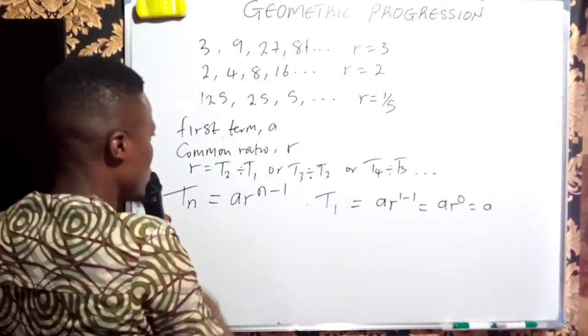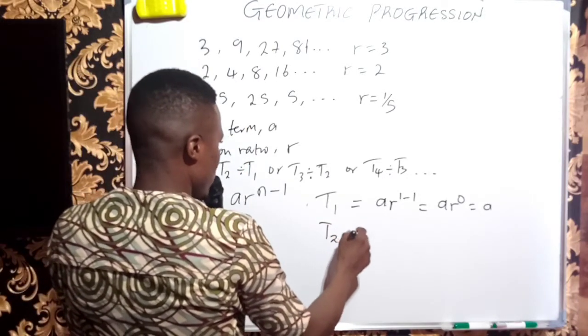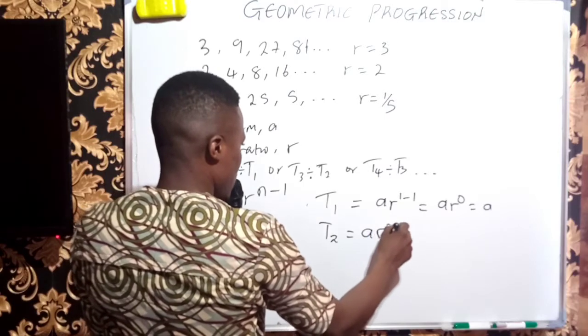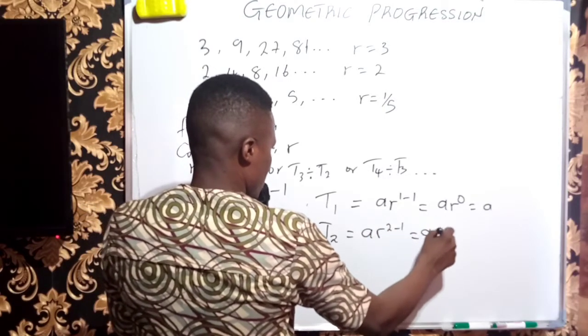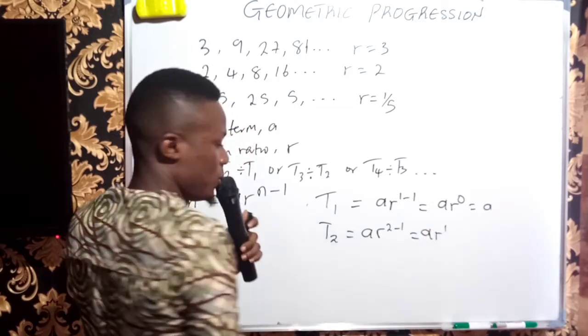You can still go on to get the second term. Second term, which is T2, will just be A times R to the power of 2 minus 1, which is just AR because 2 minus 1 is 1. You can clean up the 1 if you want.